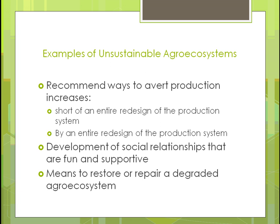You need to recommend ways to avert production decreases. Instead of redesigning the entire production system, maybe recommend small changes — the type of seed, putting in cover crops. But sometimes the production system is so poor it needs to be completely overhauled, while still keeping farmers profitable. It's also important to help farmers develop social relationships — supporting one another, neighboring farmers — and make the process enjoyable, because if it's not fun, no one's going to want to do it.